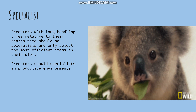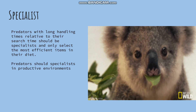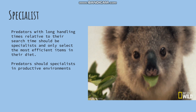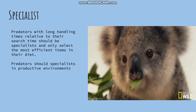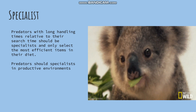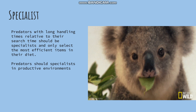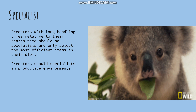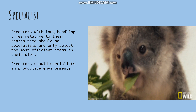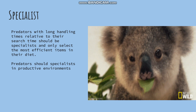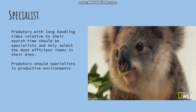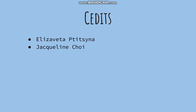Animals are specialists when profitable prey are common in selective environments, so they often have narrow diets and consume one or few prey types. Koalas are an example because they only eat eucalyptus leaves. They live in productive environments, which allows them to have shorter search time for high rewards. Thanks for watching and good luck.